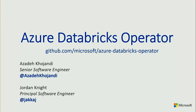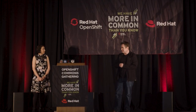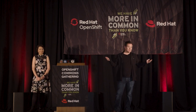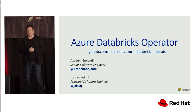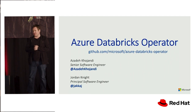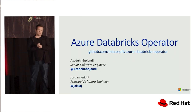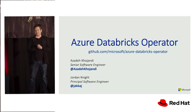My name's Jordan Knight, and with me I have Az. We're both software engineers working for Microsoft out of Australia. We're here today because we built an operator — when I say we, I mean Az — and it turns out that when you build and post an operator to GitHub, that's like sending up a bat signal for Diane, because within minutes of us making that project public, Diane was in contact with Az.